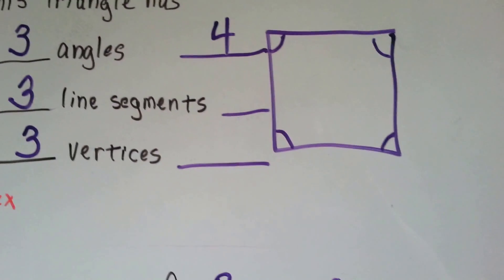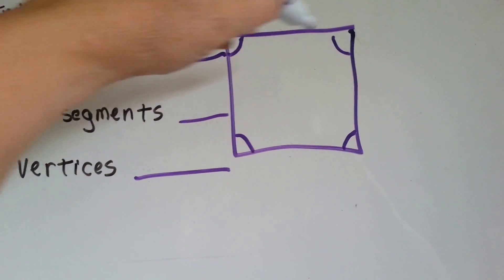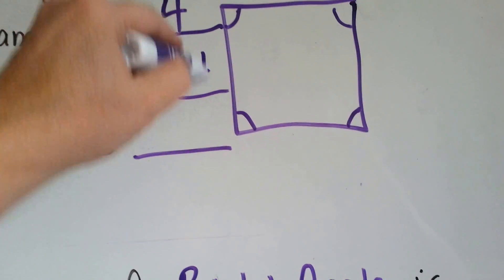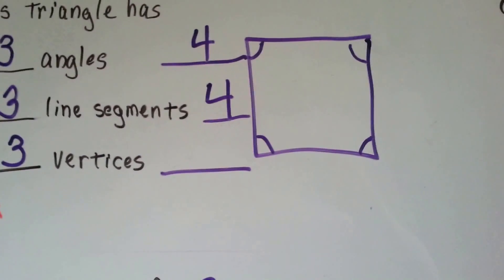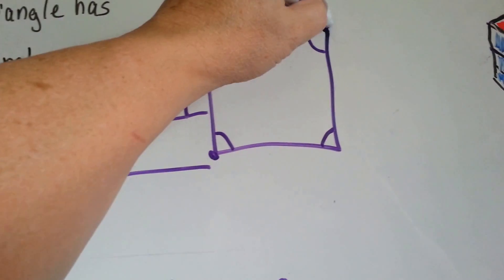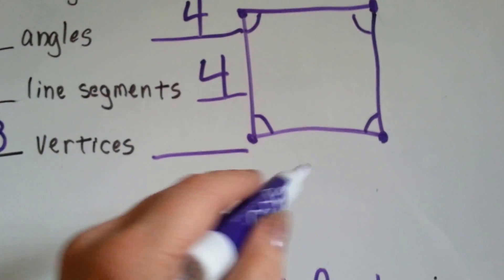How many line segments do you see? One line segment, two line segments, three line segments, four line segments. How many vertices do you see? One, two, three, four. There's four vertices, four endpoints.